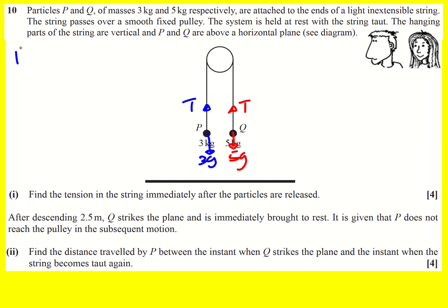So if I look at P and I'm going to apply F equals MA upwards. Upwards is positive because it's going to move upwards. Then T minus 3G is going to equal 3A, mass is 3.